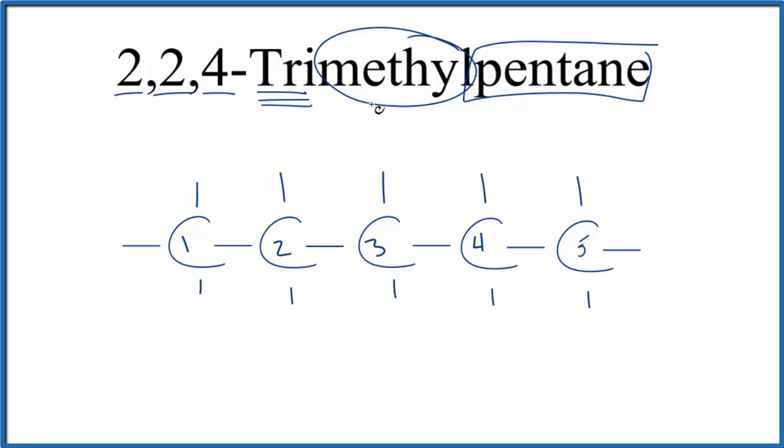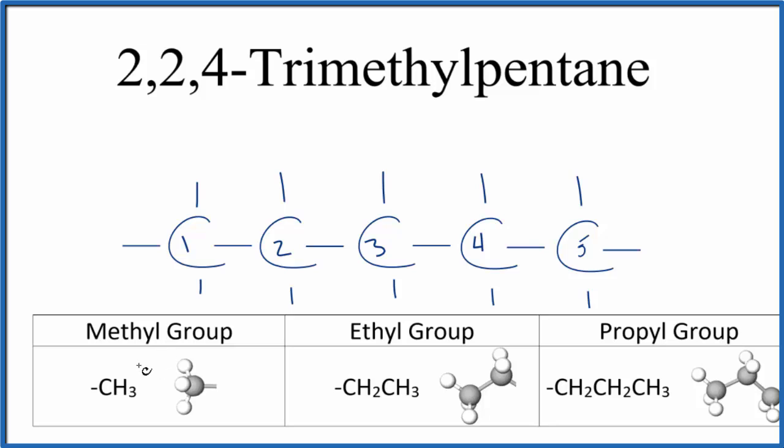2,2,4-trimethylpentane. Methyl groups look like this. A methyl group is just CH3 attached to one of these carbons here. So that's our methyl group, CH3.